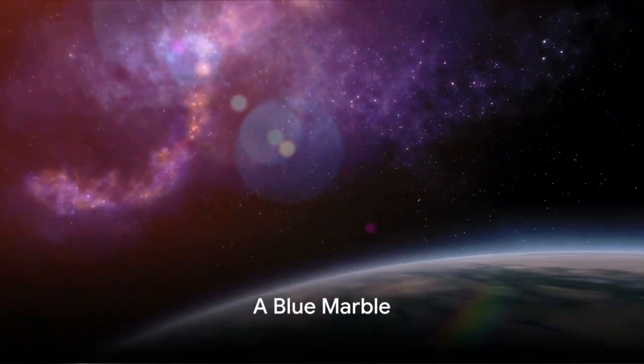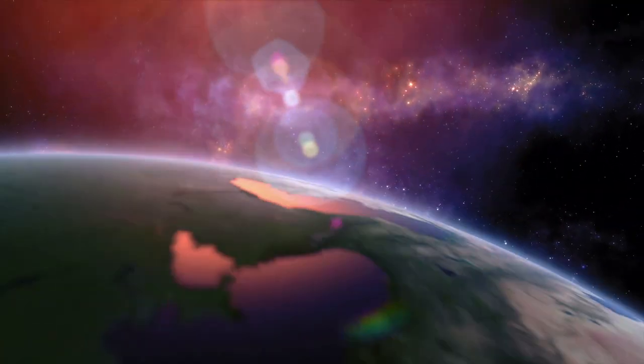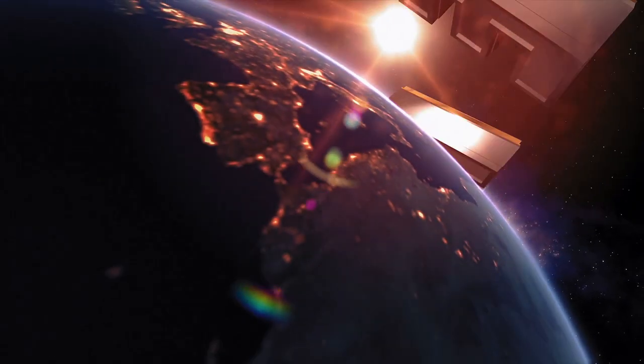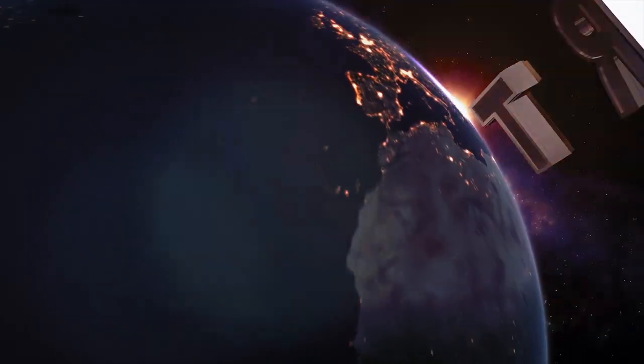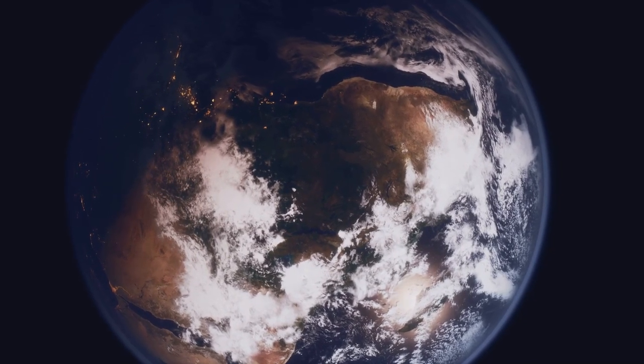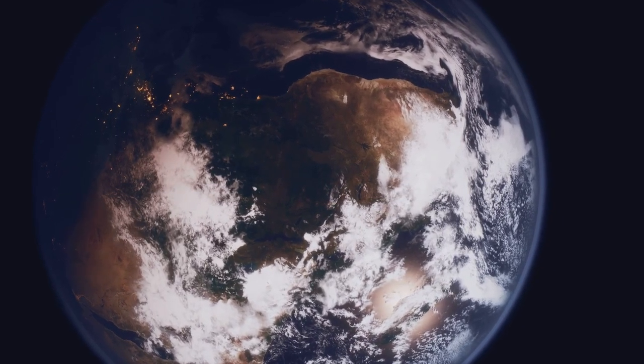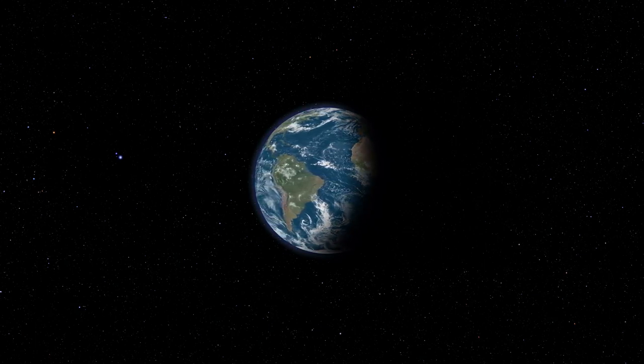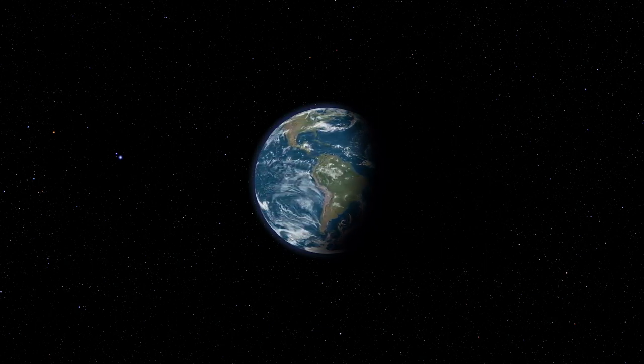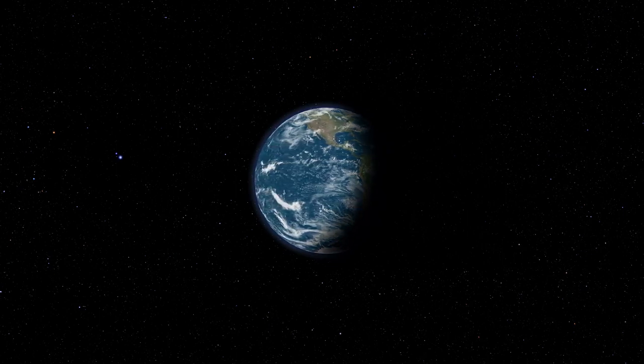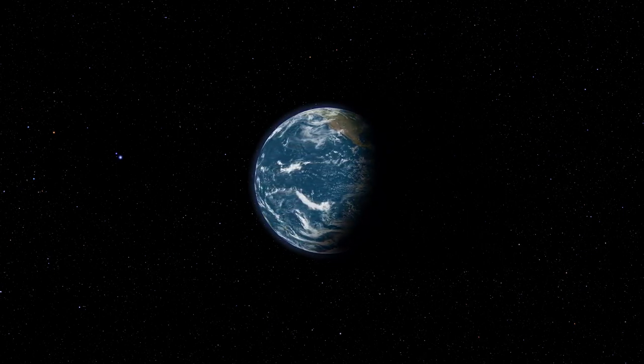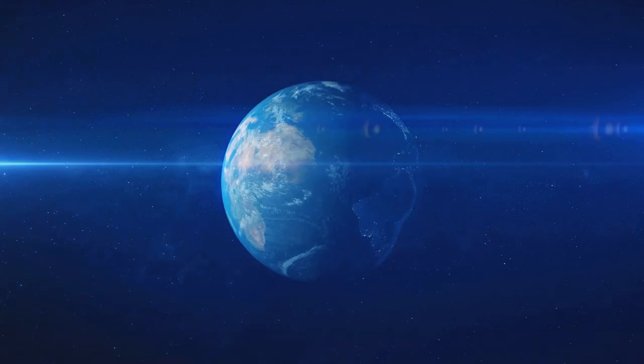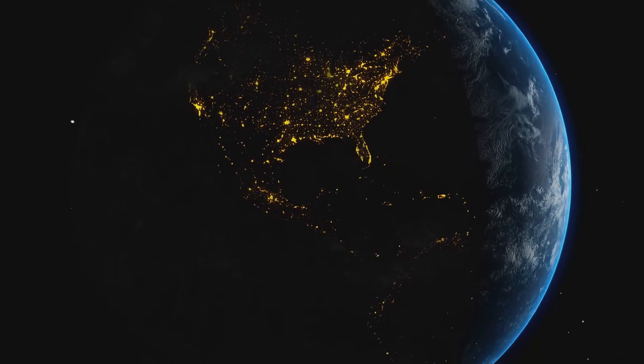Our planet, Earth, is a unique place in our solar system. It's a celestial body that formed around four and a half billion years ago from the swirling dust and gas left over from the birth of our Sun. This cosmic nursery was filled with chaos and violence, but from that tumultuous beginning, a world of serene beauty and incredible complexity emerged. Earth sits comfortably in the solar system's habitable zone, a region where conditions are just right for liquid water to exist on the surface. This precious resource, covering about 70% of our planet, gives Earth its distinctive blue appearance when viewed from space, earning it the moniker, the blue planet.